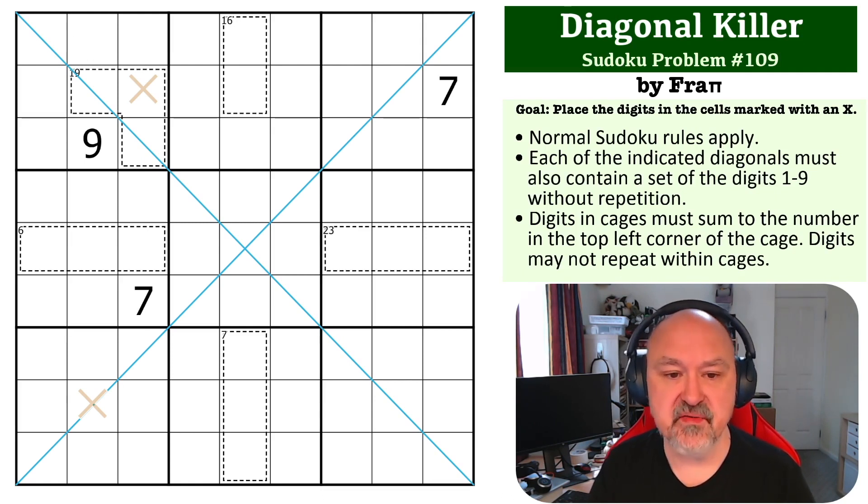The rules that are in play for this one: each of the indicated diagonals cannot contain repeated digits, so they will contain a set of the digits 1 to 9 without repetition. And digits in cages must sum to the number in the top left corner of the cage. Those are the rules we're working with. Try the link below, figure this one out for yourself. I'm going to wait for a few seconds so you can pause the video and give it a try, and then I'll be back to explain how this one works.